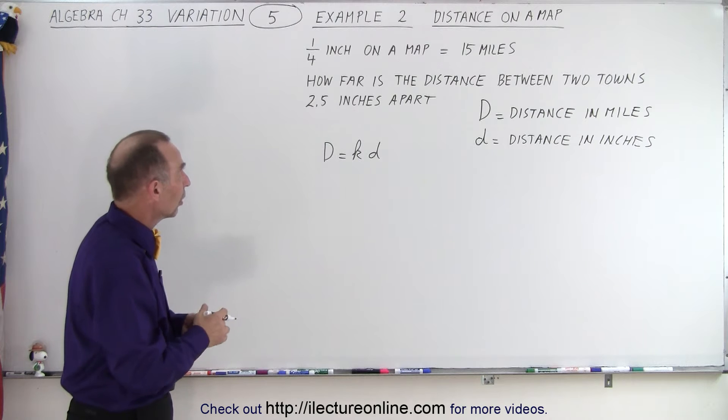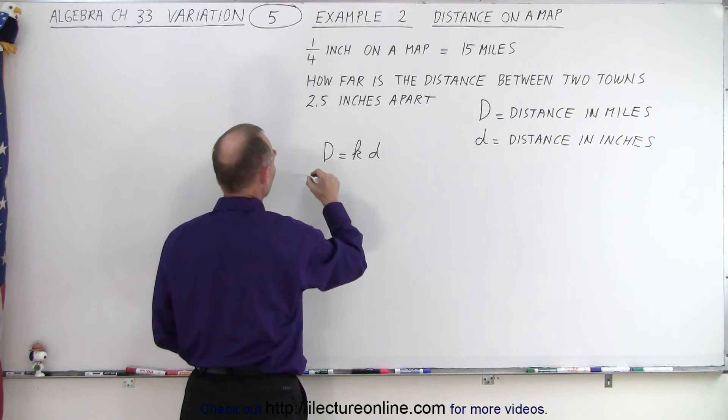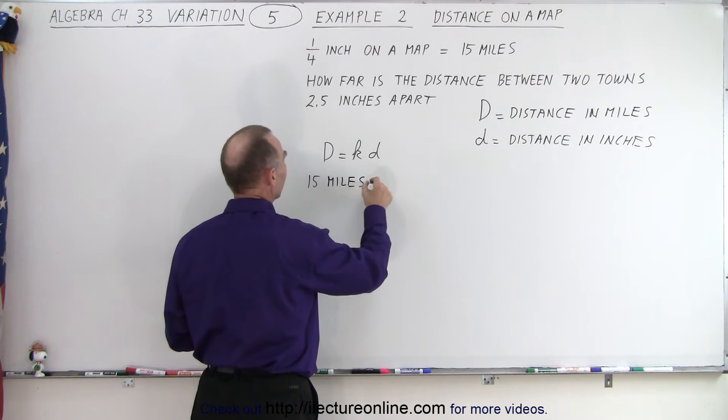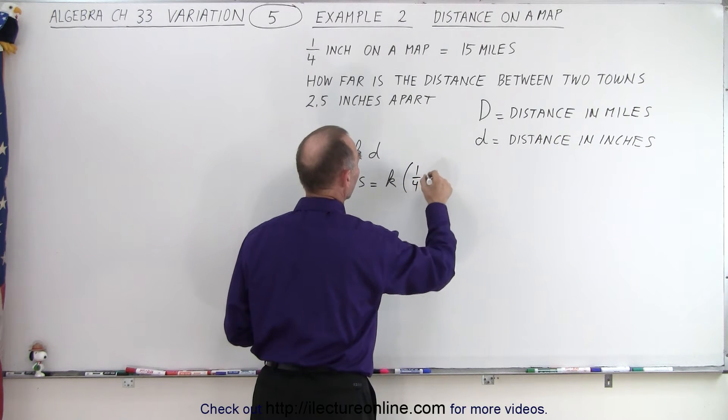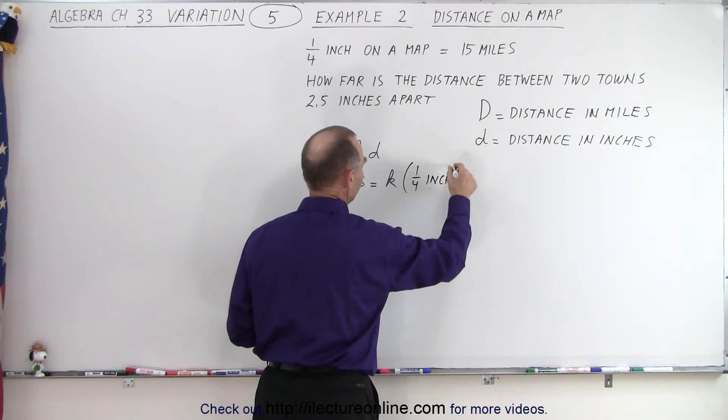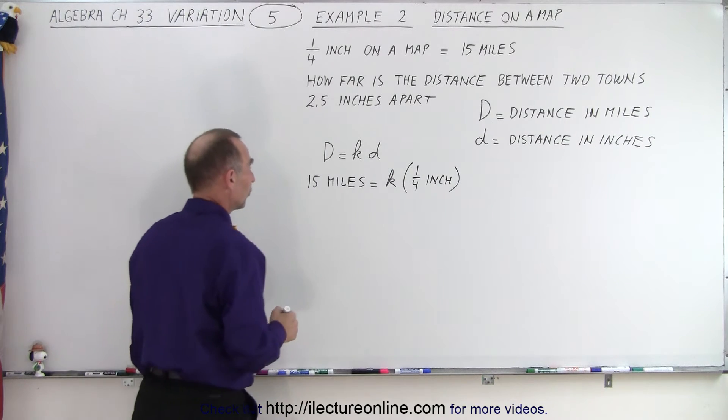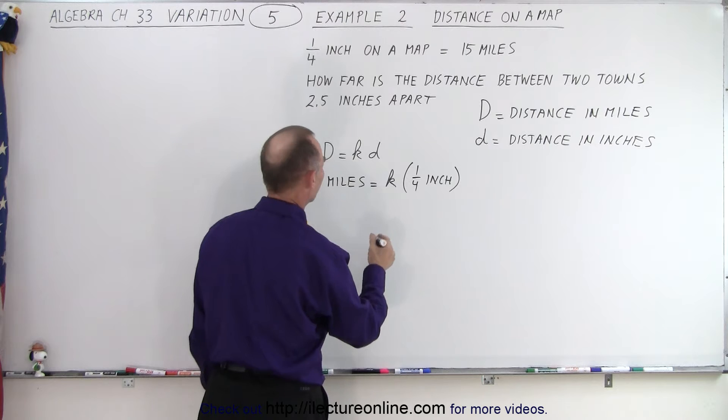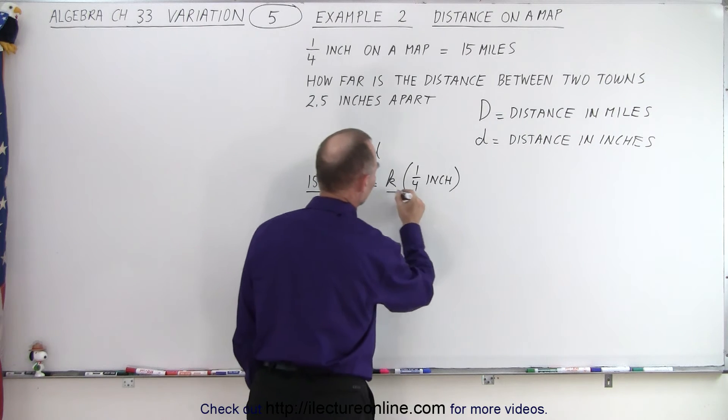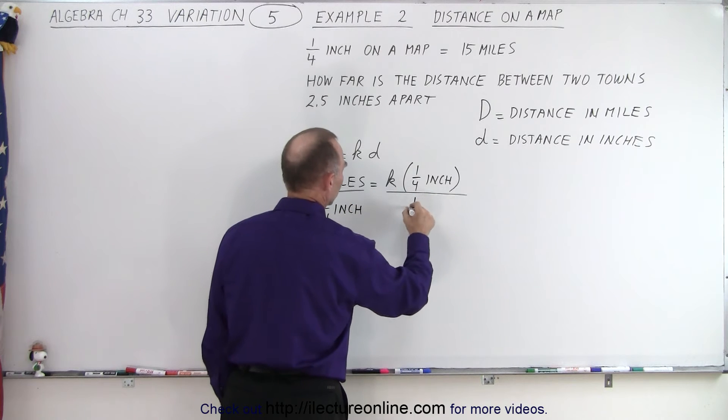So let's plug in what we have here. We have 15 miles is equal to k times the distance in inches, which is one quarter of an inch. So now we can find k in terms of miles and inches. First of all, what we're going to do is divide both sides by one quarter of an inch.